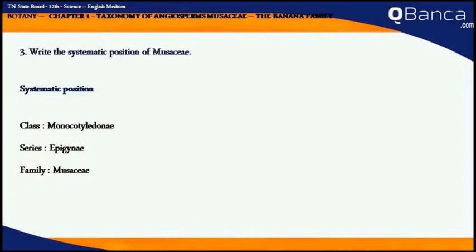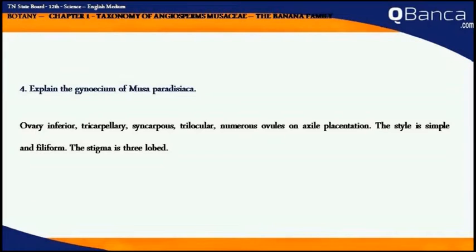Write the systematic position of Musa. Systematic position: class Monocotyledoneae, series Epigynae, family Musaceae. Explain the gynoecium of Musa paradisiaca. Ovary inferior, tricarpellary, syncarpous, trilocular, numerous ovules on axile placentation. The style is simple and filiform. The stigma is three-lobed.